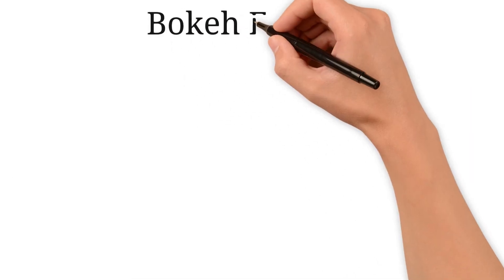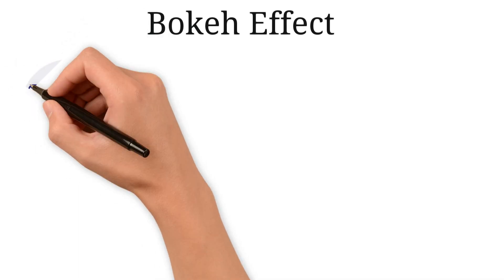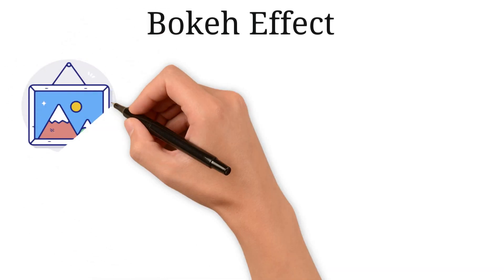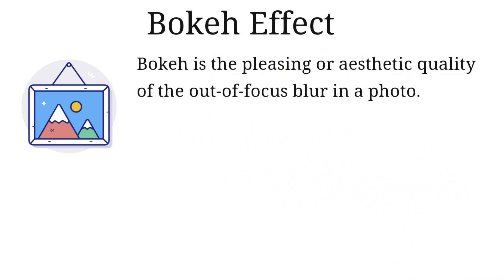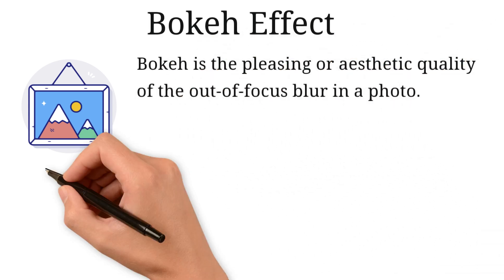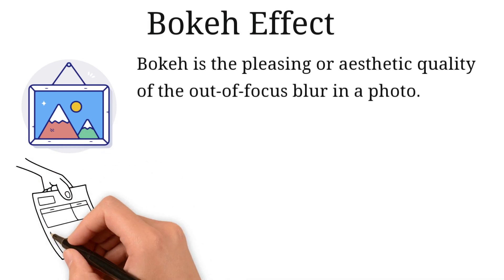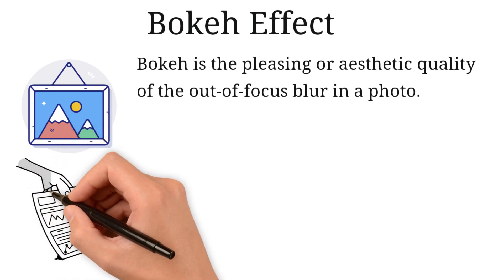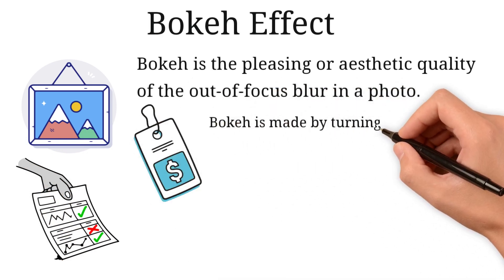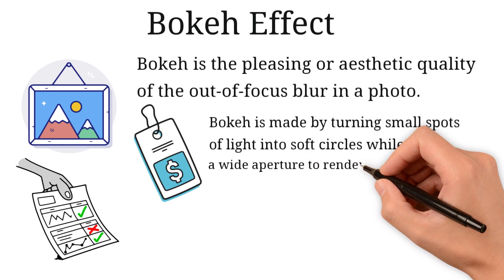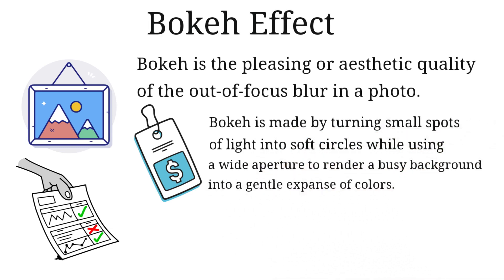Bokeh effect: bokeh is defined as the effect of a soft out-of-focus background that you get while shooting a subject. Simply said, bokeh is the pleasing or aesthetic quality of the out-of-focus blur in a photo. What makes this section so essential is that not all lenses have the same bokeh effect, and they differ in price as well. Bokeh is made by turning small spots of light into soft circles while using a wide aperture to render a busy background into a gentle expanse of colors.